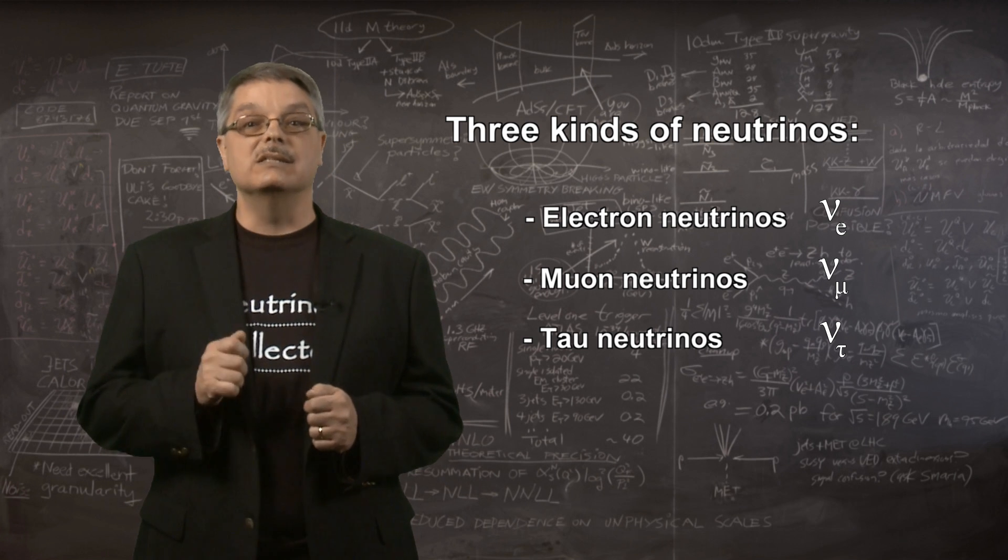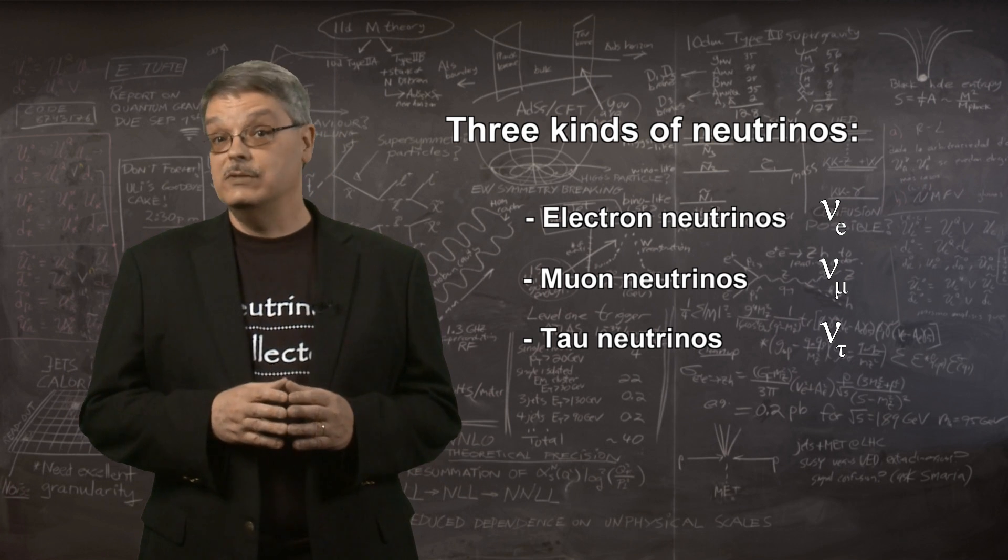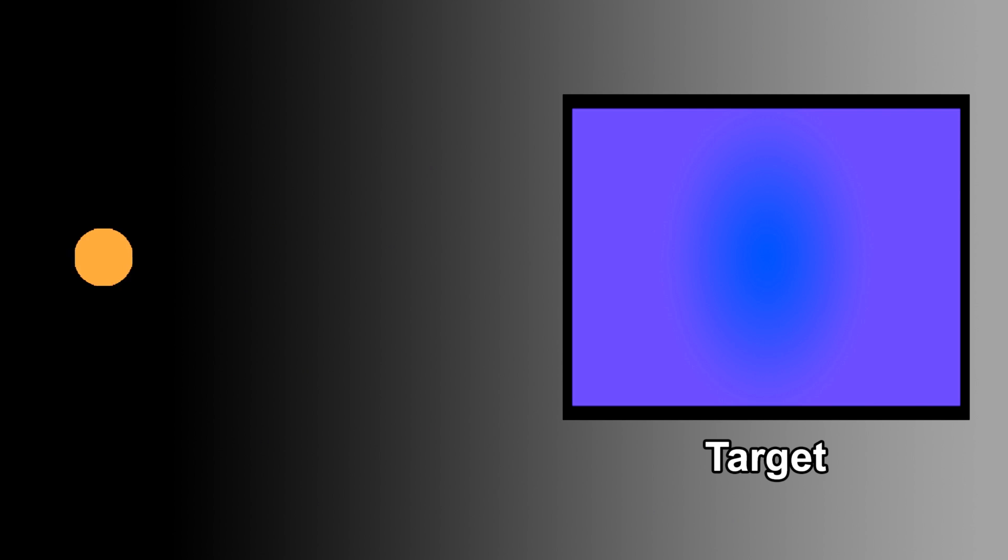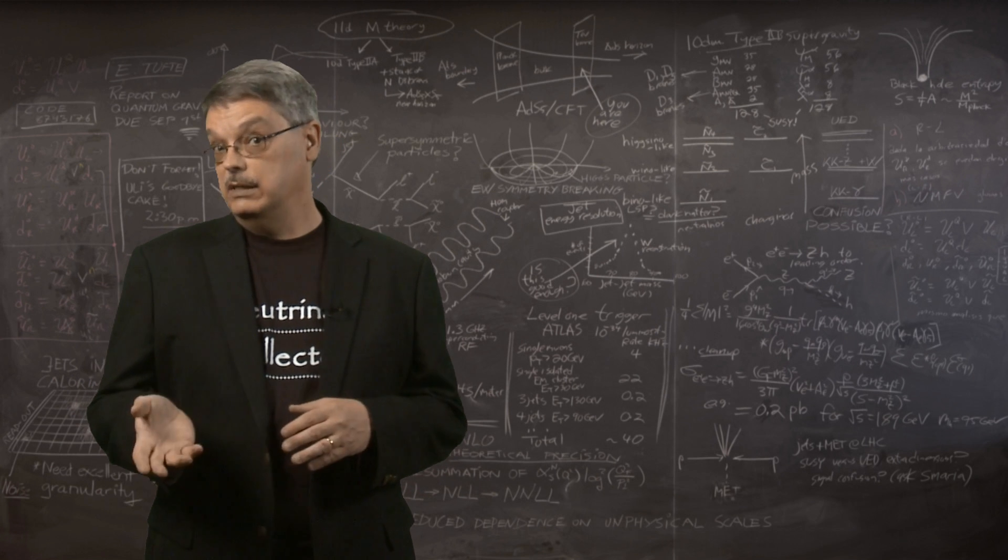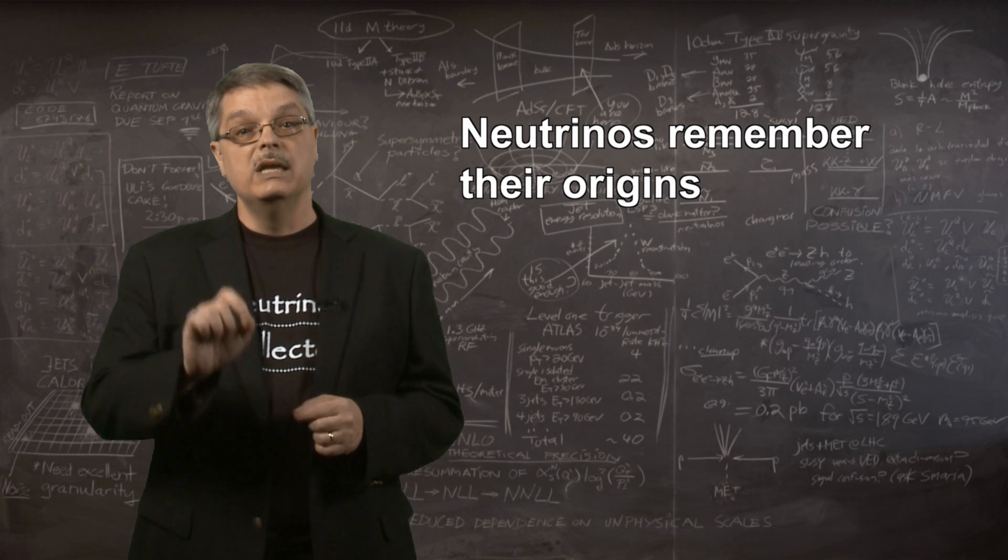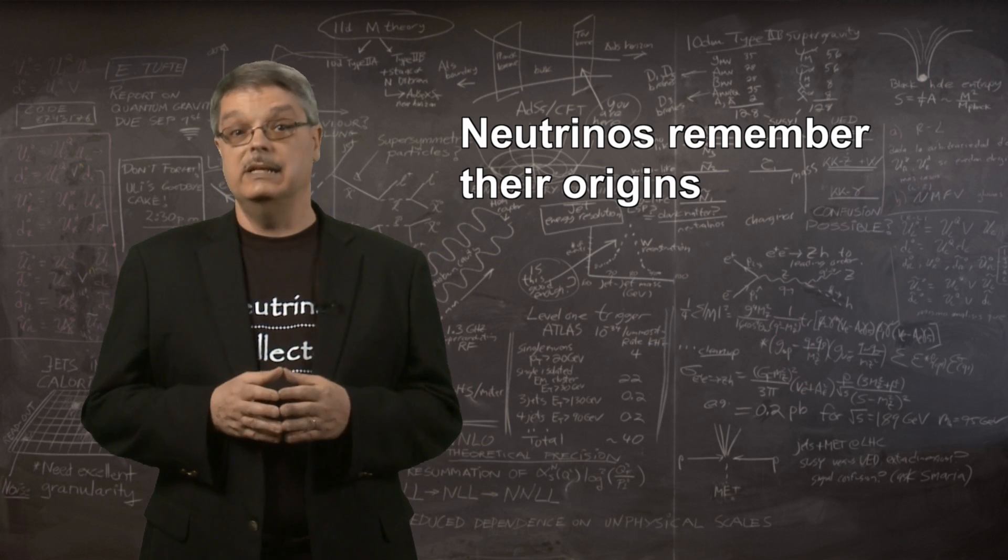The way scientists discovered that there were three different kinds of neutrinos is that neutrinos seem to remember their origins. For instance, an experiment in 1962 created neutrinos in tandem with a muon. If one of those neutrinos was then collided into an atomic nucleus, only muons were generated in the collision, never electrons and never tau particles. The neutrino remembered how it was made. This observation led to a Nobel Prize in 1988.